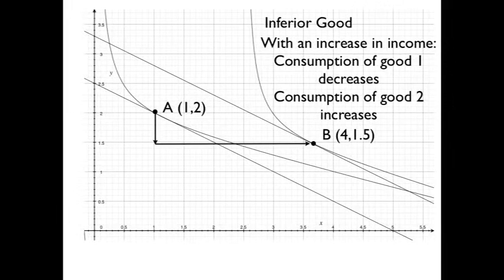So we're going to try to map out the inferior good using these indifference curves. Income increases and our budget line has a parallel shift out. But we decided that we'd actually consume more of good 2 on the x-axis and consume less of good 1 on the y-axis. That's the graphical representation of when an increase in income leads us to consume less of good 1.